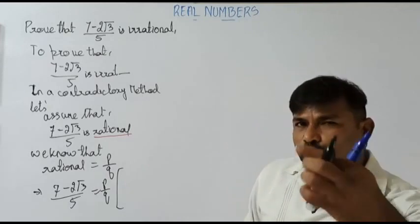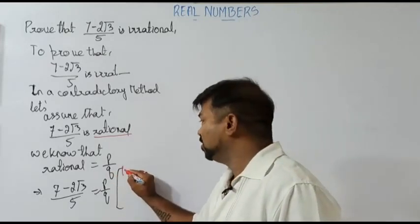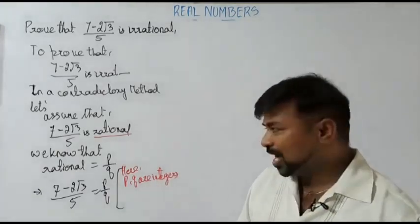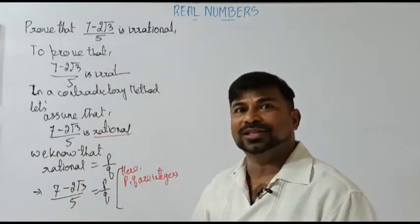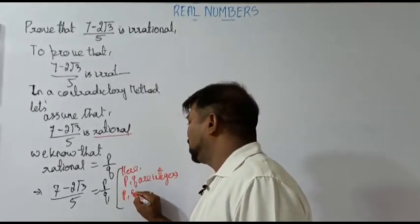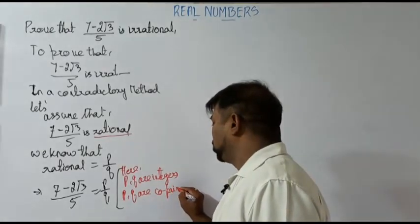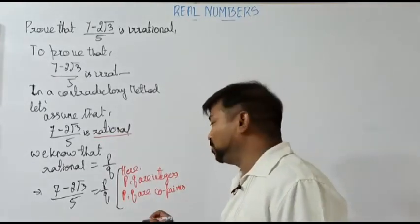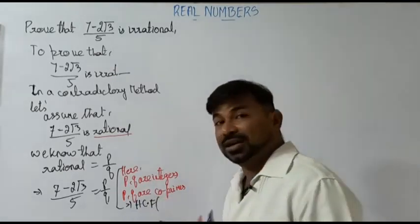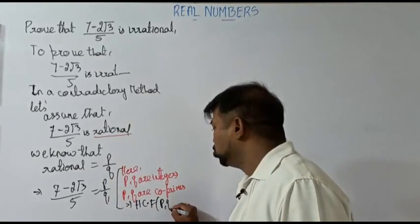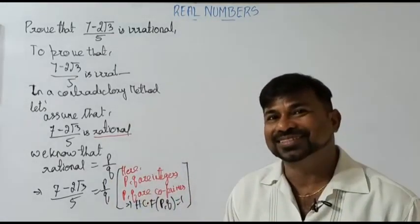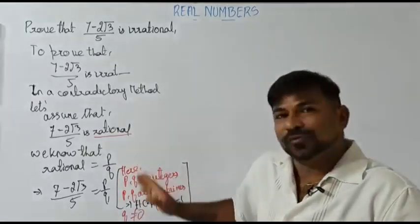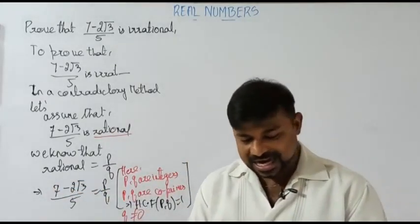Now, according to the rules of P/Q: P and Q are integers — that is the first rule. Also, P and Q are co-primes, meaning they should be integers and co-prime. The HCF of P and Q should be only one. And the last point: the denominator Q should not be zero. These are the three rules a rational number must follow.